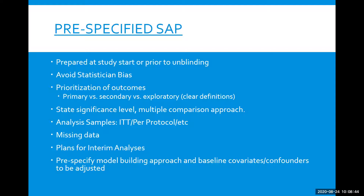There are often a variety of choices that a statistician can choose in which to analyze the data. Having a very detailed statistical analysis plan will minimize the statistician's biases. It will pre-specify the prioritization of outcomes — what is primary, what is the secondary outcome, et cetera. It should state the significance level that will be used for conclusions as well as approaches to multiple comparisons.